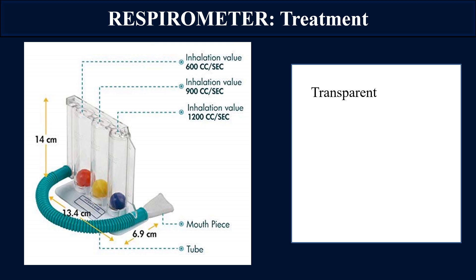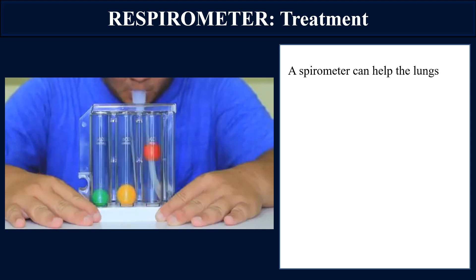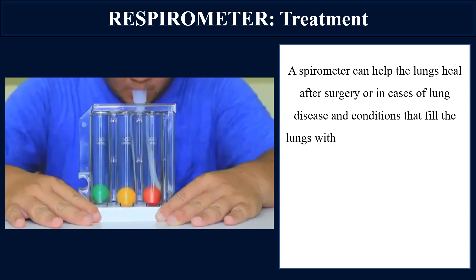The incentive spirometer consists of a transparent main body with a base, small spherical balls colored red, yellow, and blue, and a connected mouthpiece through which the person exhales air. The balls move upward and the markings indicate the person's capacity for air, telling how much air volume they are able to move.